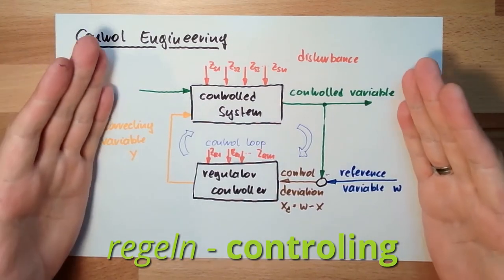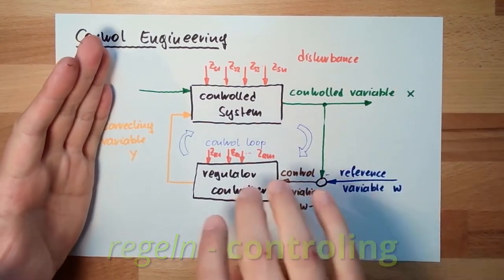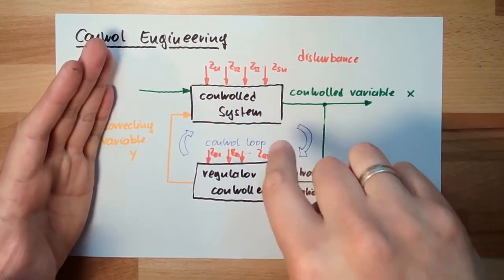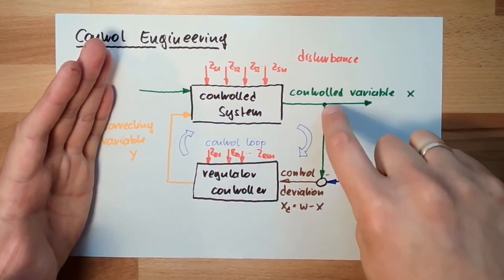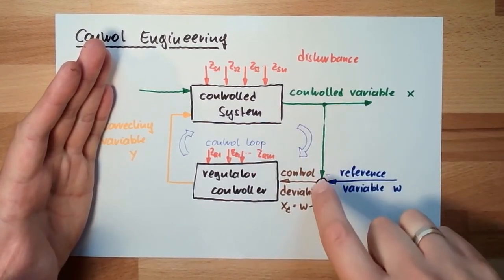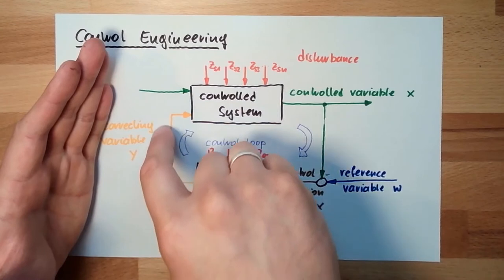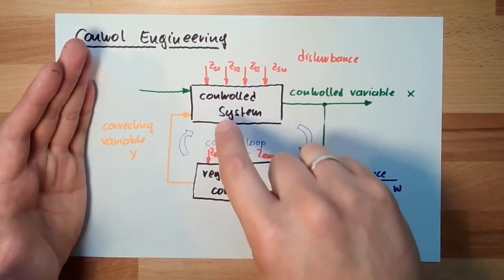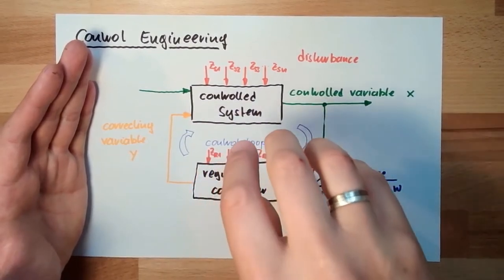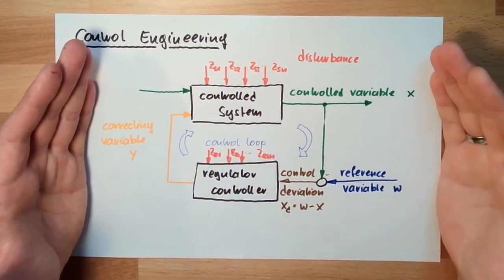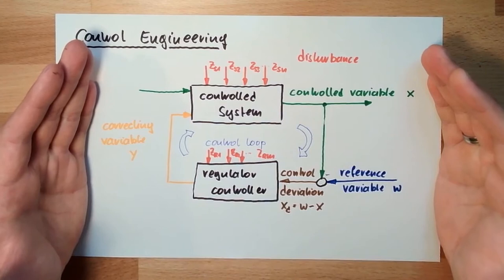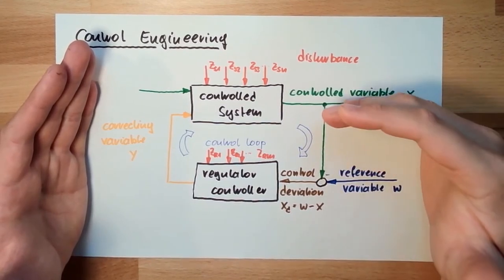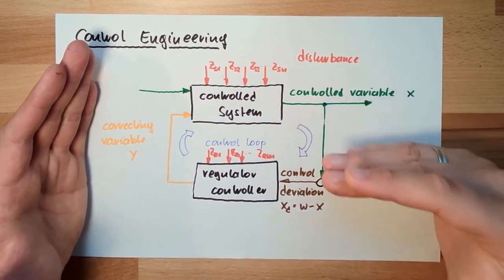Controlling is exactly this here: the continuous measurement and detection of a controlled variable, and continuous influencing of this controlled variable by a correcting variable. And regulating means the control variable should get closer to the reference variable.